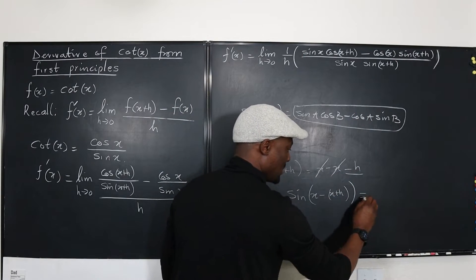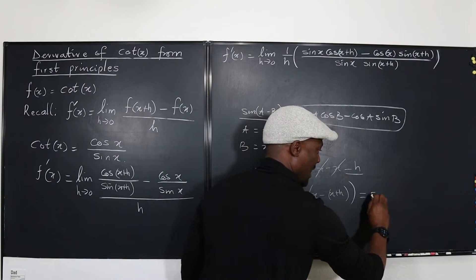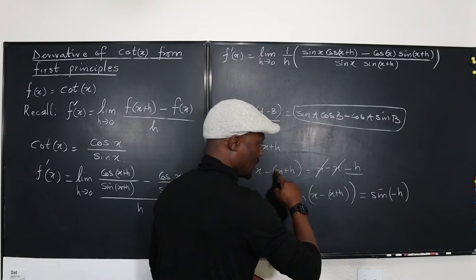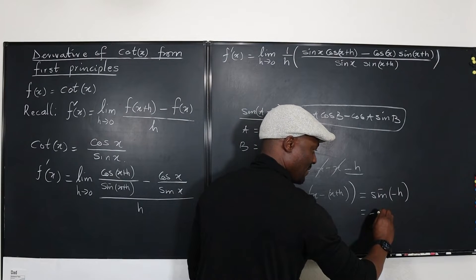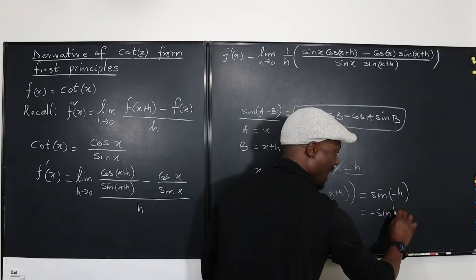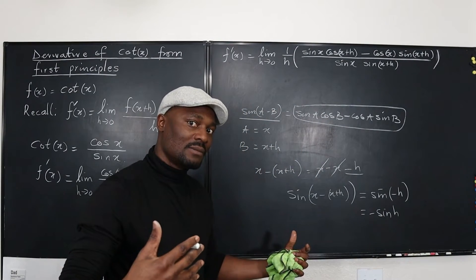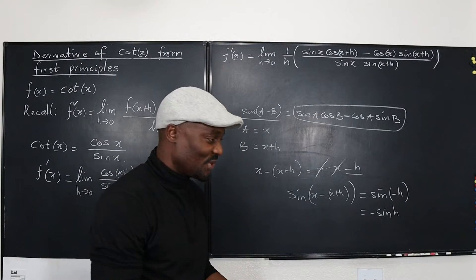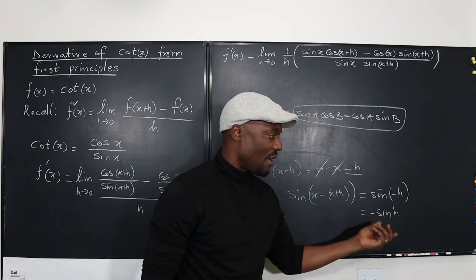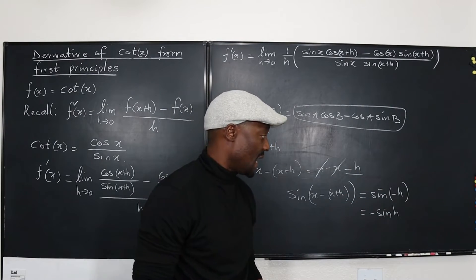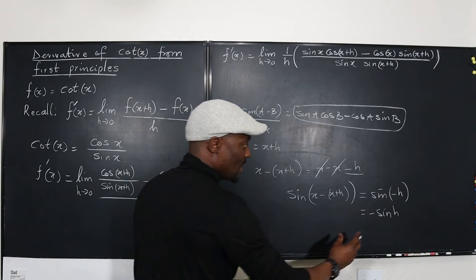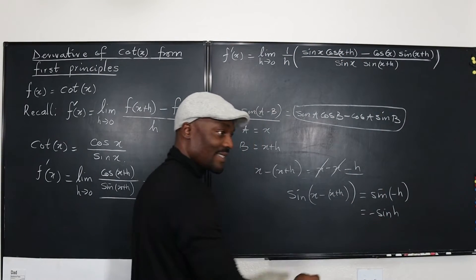it, when simplified, will become just sine negative h. I just showed you the simplification of this. But sine negative h is the same thing as negative sine h, because h is an odd function. So the negative of the argument, you can move it outside and then you get a negative function.